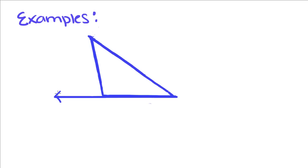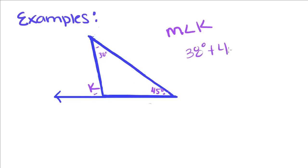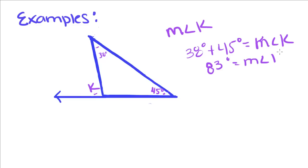Now we're going to do an example where we're trying to find out what the measure of angle K is. Since we know that the sum of these two angles equals angle K, we're going to add 38 plus 45 and set it equal to the measure of angle K. If you add those up, you get 83 degrees is equal to the measure of angle K. So this angle right here is an 83 degree angle.